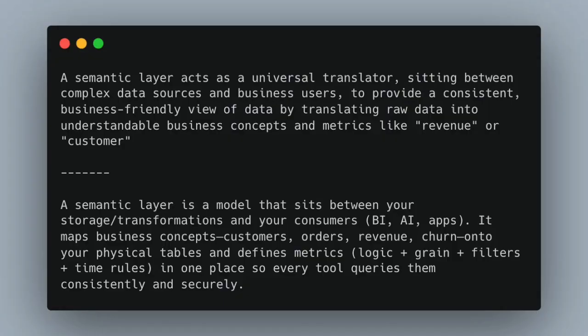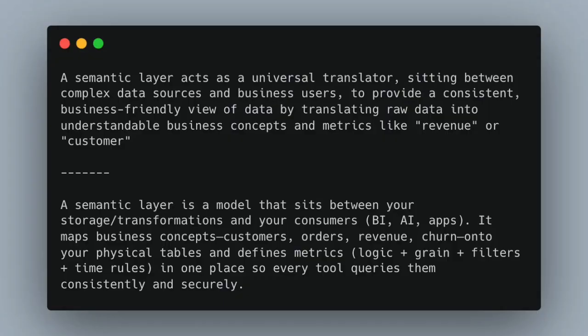No one has really any hard implementation facts, so it was a little hard to come up with a definition. But as best as I could tell, when you look across all the vendors, more or less this is what they say: the semantic layer acts as a universal translator sitting between the complex data sources and business users. 'Business users' is key - that keeps coming up. They're talking about some sort of layer between the data and the business users, to provide a consistent business-friendly view of data by translating raw data into understandable business concepts and metrics like revenue or customer.